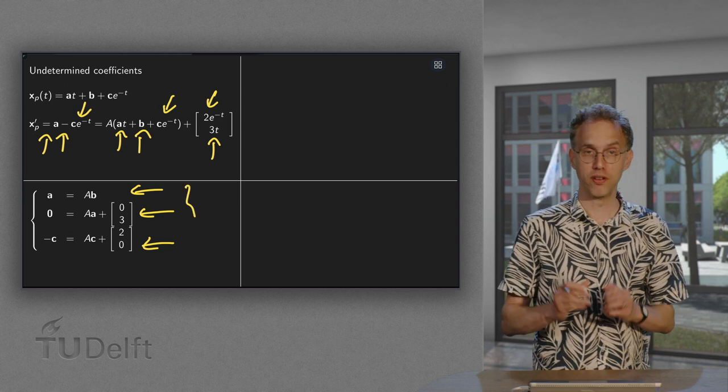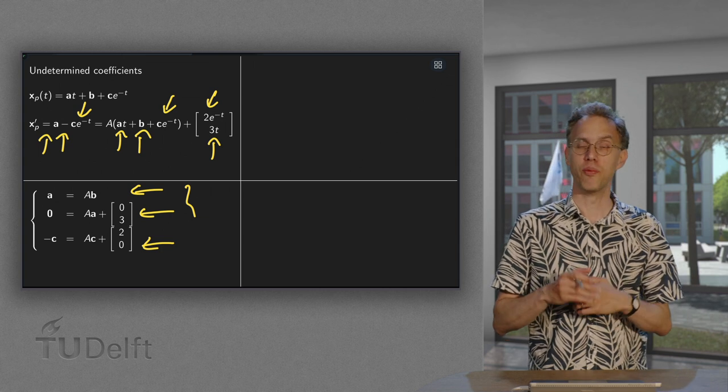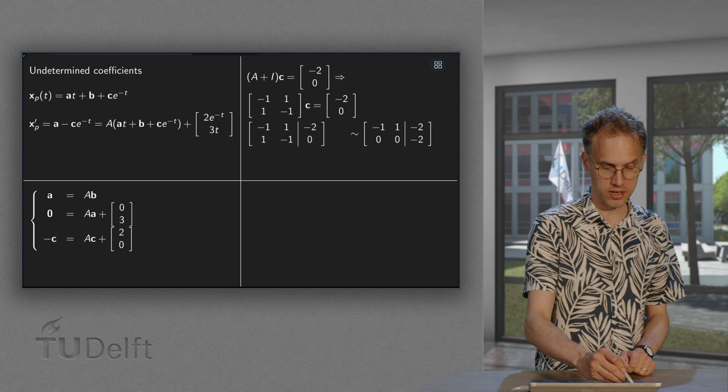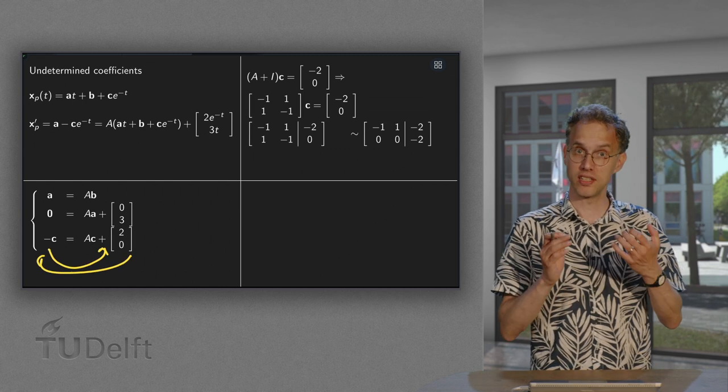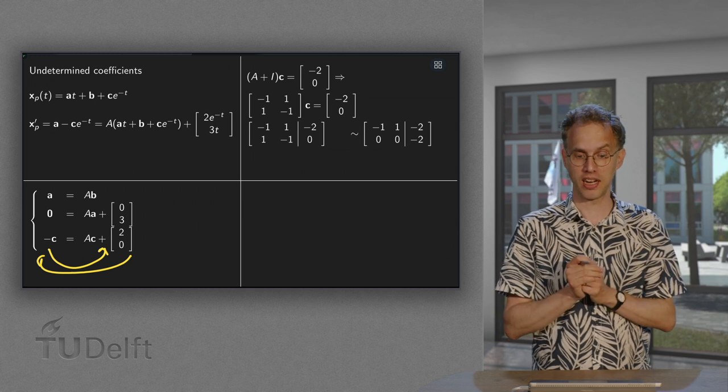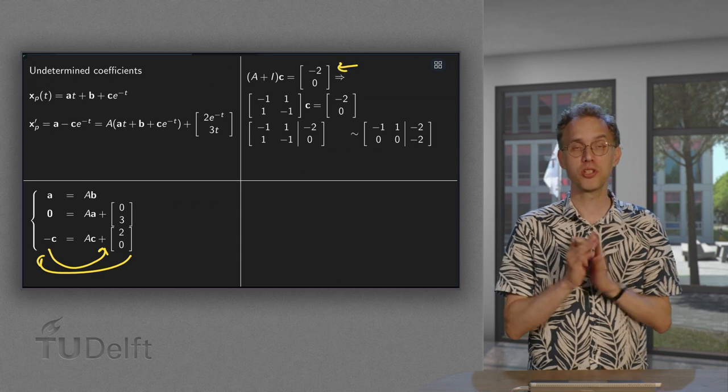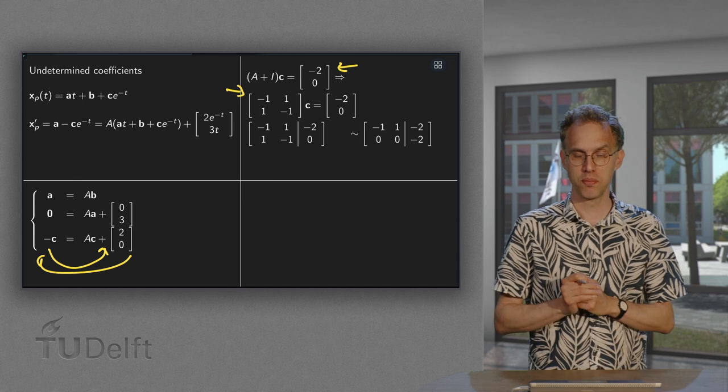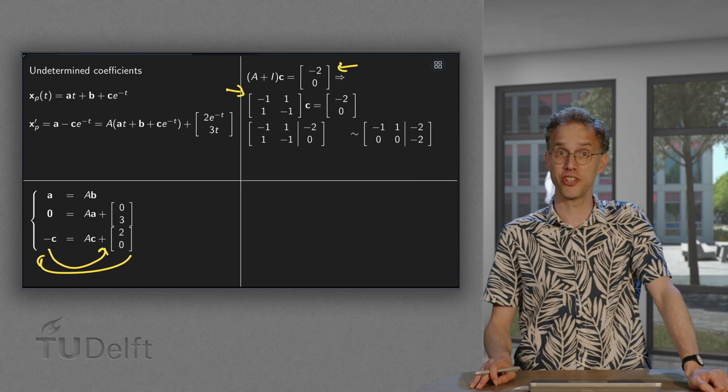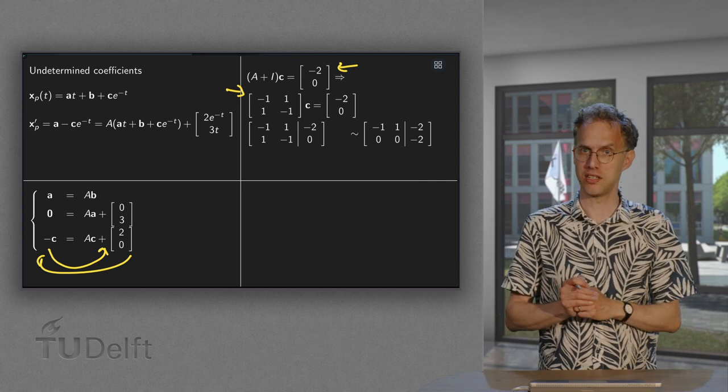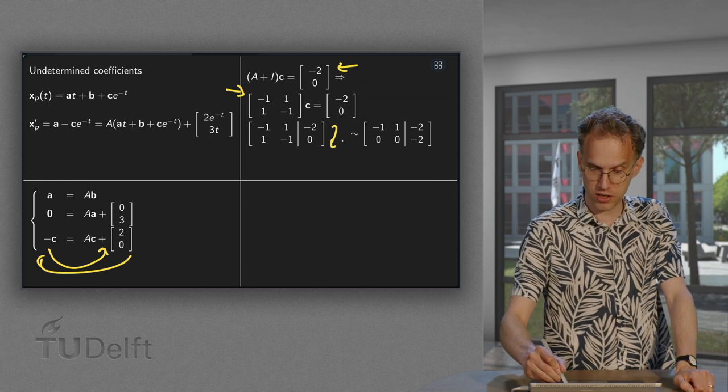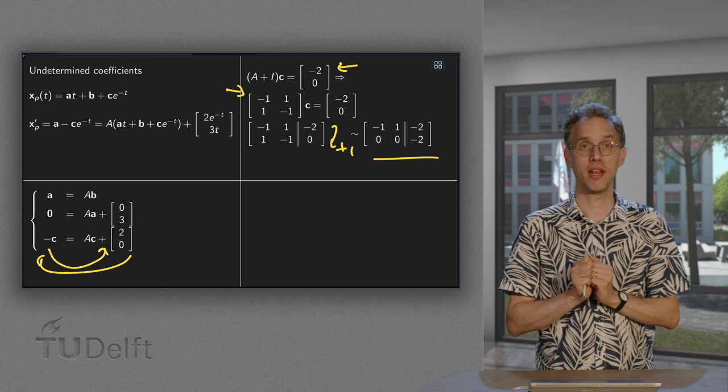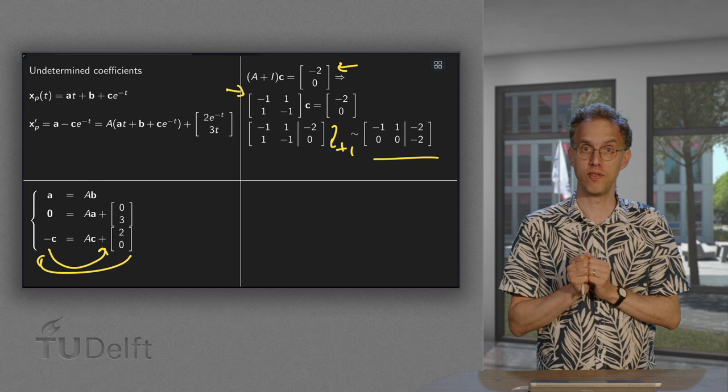Now the first two are not a problem. The first two we did those in the previous video. You can solve for a. And once you have a you can solve for b. That part is fine. But now let's look at the third equation. It looks okay as well. We can just put c to the other side and the 2 0 to the other side. So we get a plus a times c plus c or a plus identity matrix times c equals minus 2 0. So it looks okay. Just matrix times unknown vector equals known right hand side. So what's the problem? Well, if we compute a plus i, we get minus 1 1, 1 minus 1. And if you try this with an inverse, you will see that the inverse does not exist. Okay, let's try to do some row reduction. Maybe that works. So we add this once here. And we see that we get a contradiction here. So no solution. So there's a problem here. Method of undetermined coefficients does not work. We do not find a solution.